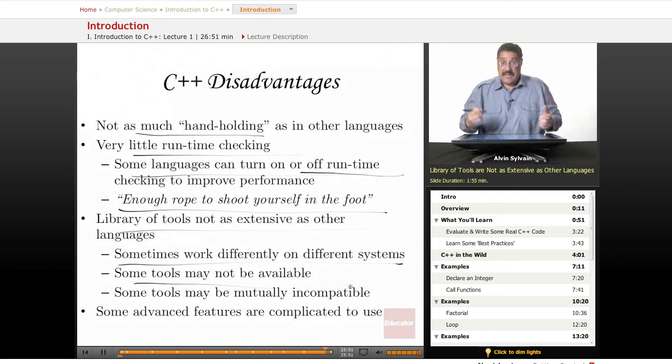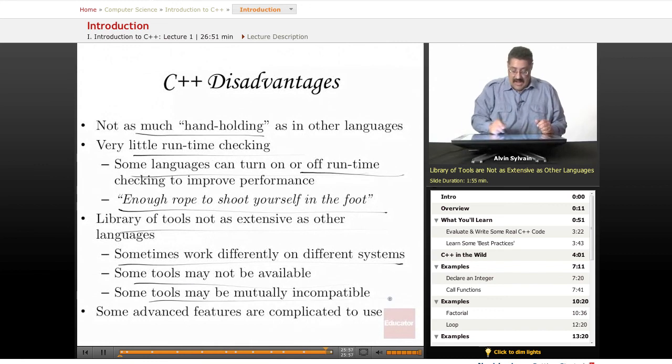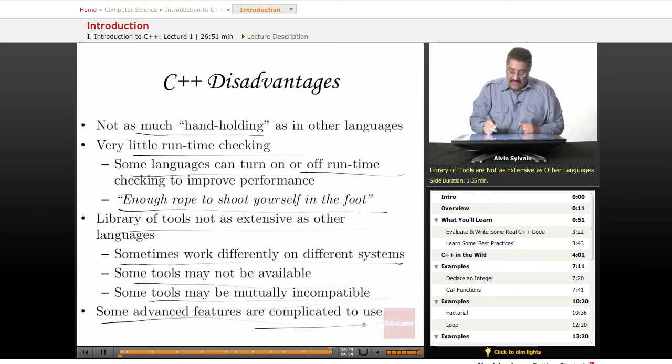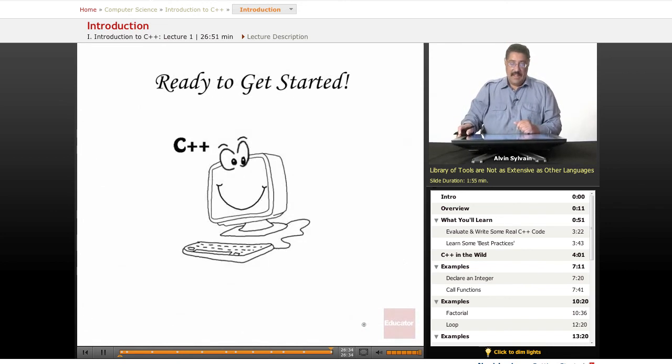And occasionally, because it's not as extensive as other, some tools may not be available on some systems. And occasionally, you run into something where libraries are mutually incompatible. It doesn't happen often, but it does happen sometimes. It's something to be aware of. And there are some very advanced features in C++ that are a little hard to figure out how to work them. Basically, what you need to do is take this class. We will, not this class, because this is the introduction class. Take the next class where we will cover some of the more advanced features and hang on to the code so that you can just cut and paste the code into your new projects to work them the way you need to work them.